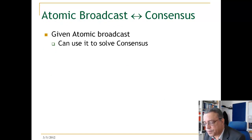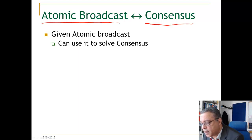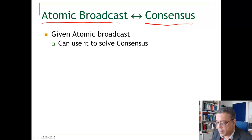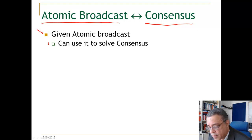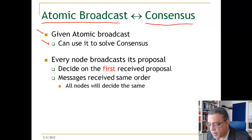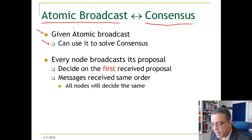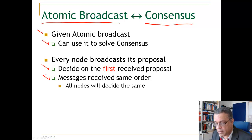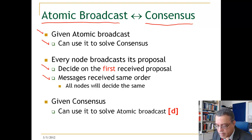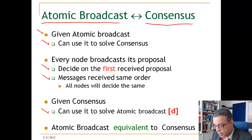It turns out that the problem of atomic broadcast and the problem of consensus are equivalent problems. Given an atomic broadcast service, we can implement a consensus service, and vice versa — given a consensus service, we can implement an atomic broadcast service. Here is a solution for implementing consensus using atomic broadcast: every node broadcasts its proposal, every node decides on the first received proposal, and since all messages are delivered in the same order, they will all decide on the same value. I'll let you think about how, given consensus, we can solve the problem of atomic broadcast — it turns out that atomic broadcast is equivalent to consensus.